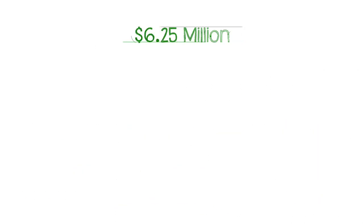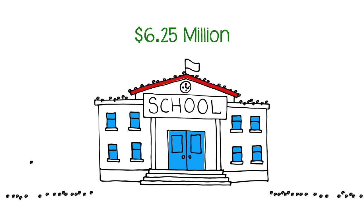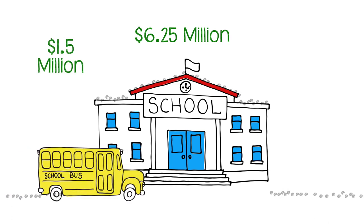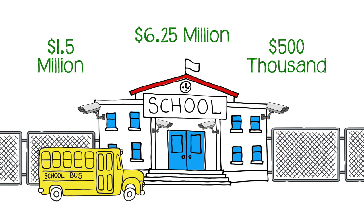Additionally, $6.25 million will be used to pay insurance deductibles for repairs of roofs damaged by hailstorms in 2016 and 2017. $1.5 million would be used to replace buses with more than 200,000 miles, and approximately $500,000 would be spent on controlled access for front entrances of schools and fencing for elementary schools.